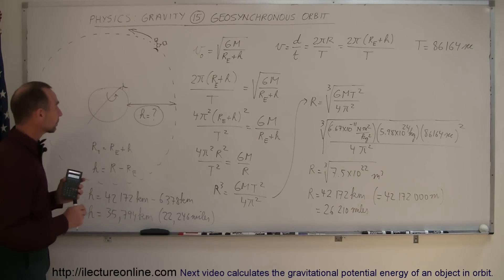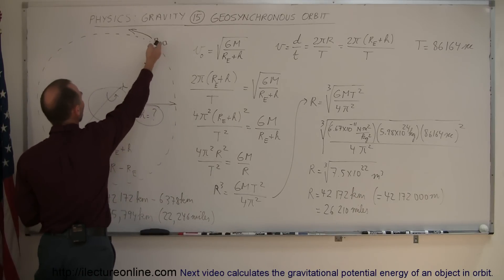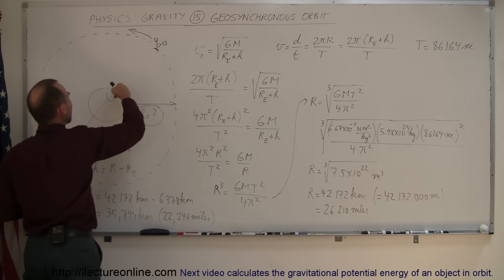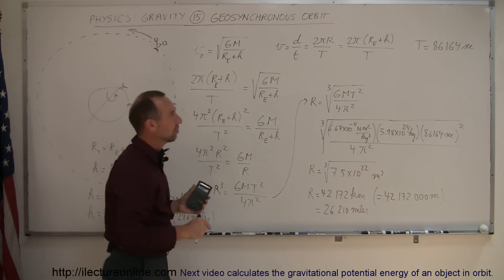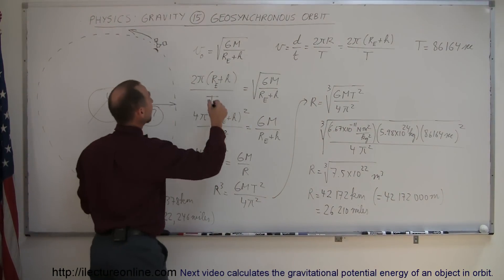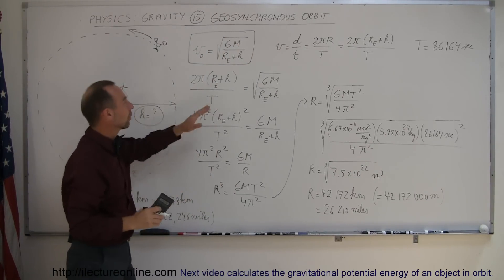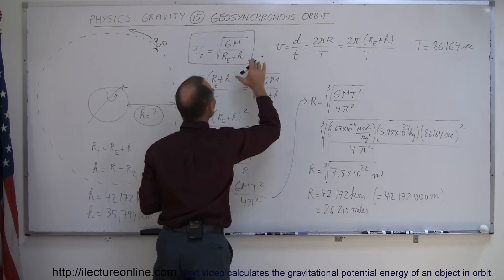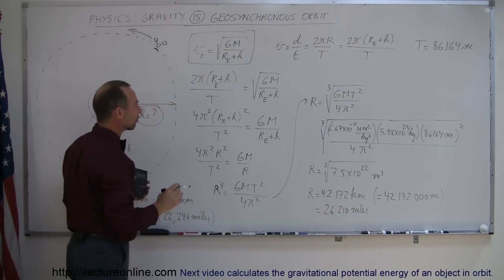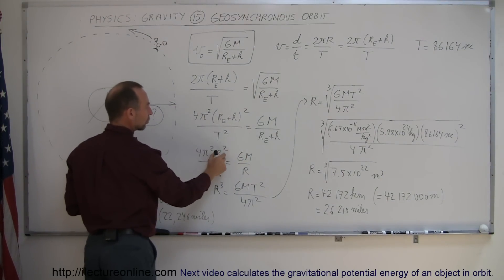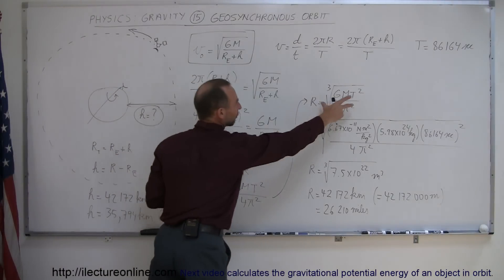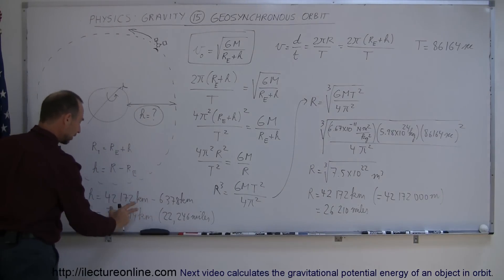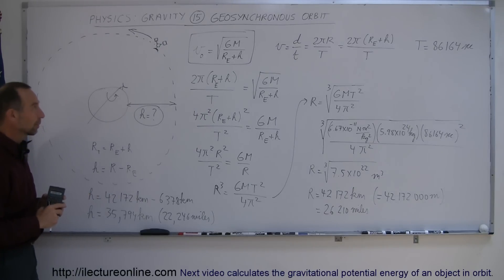Reviewing what we did: geosynchronous orbit means the satellite always stays above the exact same point as the earth turns, so the satellite's orbital period equals the earth's rotation period of 86,164 seconds. We used the orbital velocity equation with total radius (r_e + h), set it equal to circumference over period, substituted r for (r_e + h), and solved for r as the cube root of GMT²/4π². Subtracting Earth's radius from r gives the geosynchronous orbit height.